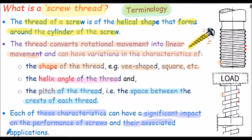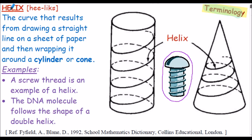For continuation of our terminology, let's define the helix. The curve that results from drawing a straight line on a sheet of paper and then wrapping it around a cylinder or a cone is termed the helix. So the screw thread is an example of a helix that's relevant to this presentation.